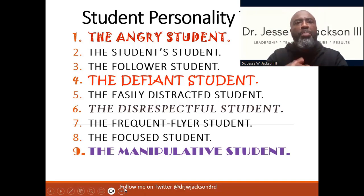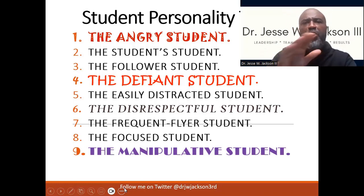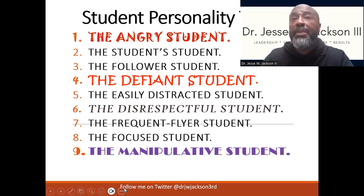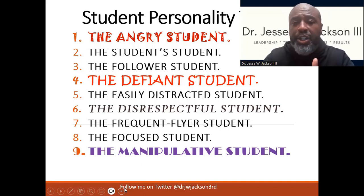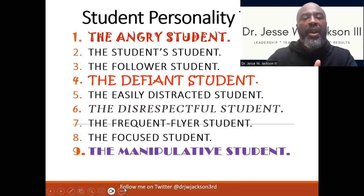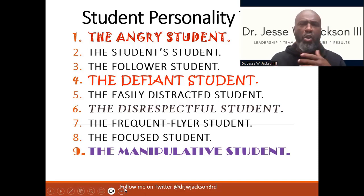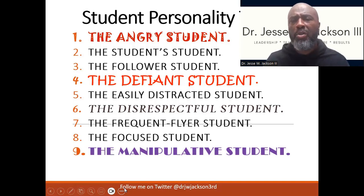Some student personalities that will conflict with a passive aggressive teacher include: angry kids, followers, defiant kids, kids that are easily distracted, kids who are flat out disrespectful, and the frequent flyer — everybody knows who that is. There are also manipulative kids. That's a kid who says things like, 'My mother told me I ain't got to listen to you.' You say put your phone away and they say 'Shut up.' That's manipulating.